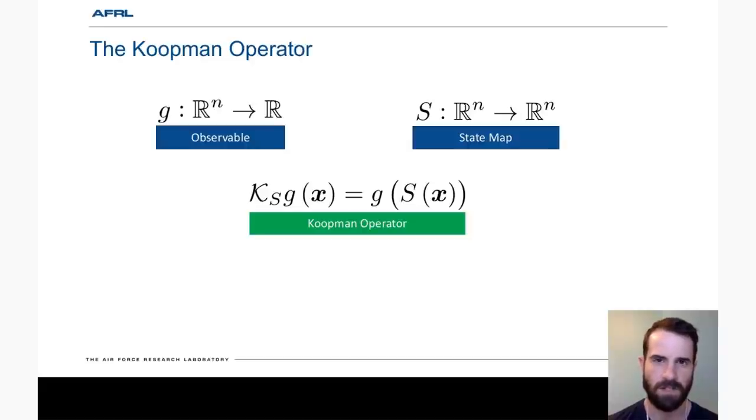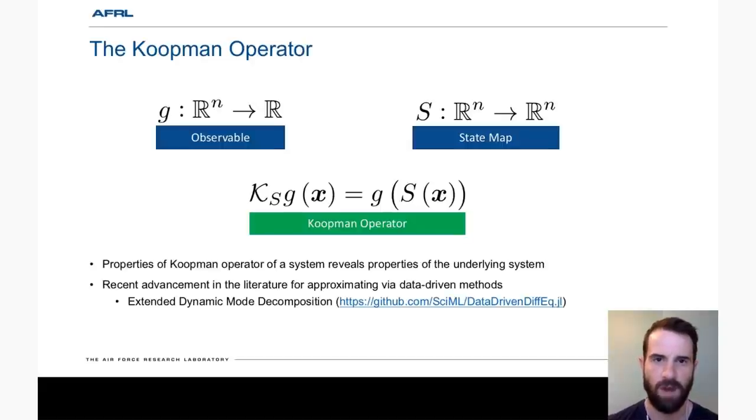This can be described via the linear Koopman operator, also known as the composition operator. There's been a lot of interest recently in the literature in understanding this operator because the properties of this operator reveal properties of the underlying system. Because it's linear, it essentially allows you to transform potentially a finite non-linear system to a linear, albeit potentially infinite dimensional, system. A lot of the recent advancements in the literature is geared towards approximating this operator via data-driven approaches such as that found in data-driven DMD.